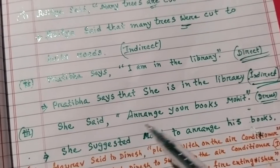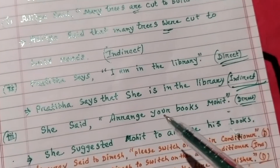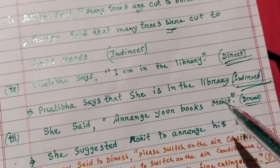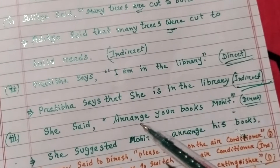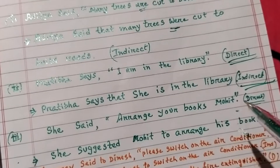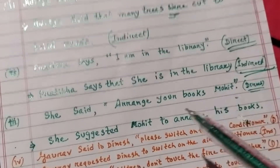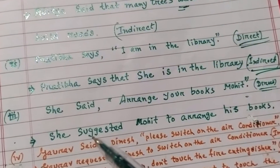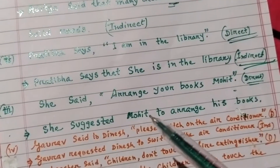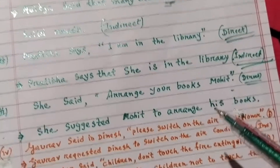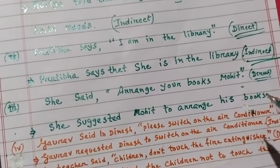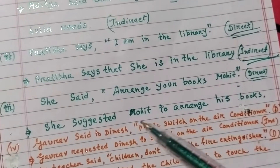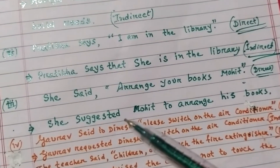Q2 Number 3: Direct speech — 'She said, arrange your books, Mohit.' In indirect speech: 'She suggested Mohit to arrange his books.' Here 'said' changes to 'suggested'.